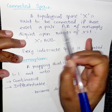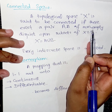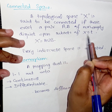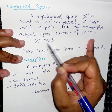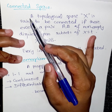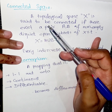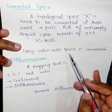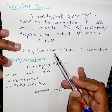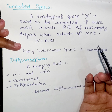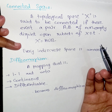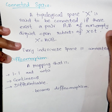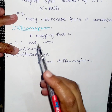A topological space is said to be connected if there does not exist a pair A, B of non-empty disjoint open subsets of X such that X equals A union B. For example, every indiscrete space is connected, since the indiscrete space contains only two sets: the empty set and the set X itself.